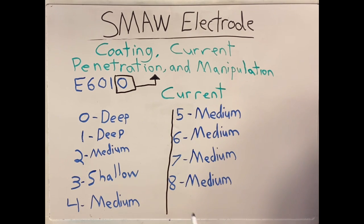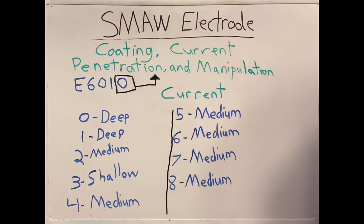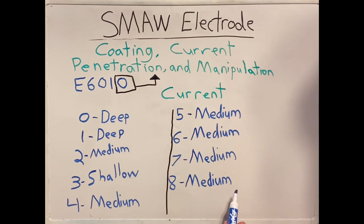Last but not least, if our last number is an eight, such as E6018 or E7018 — which is used a lot in structural — it will give us medium penetration.